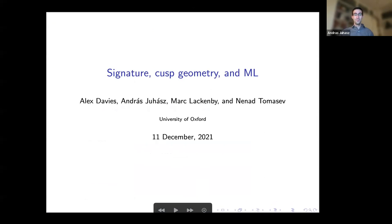Right, so this is a project where we used machine learning as a tool to find an interesting relationship between the cusp geometry of hyperbolic knots and the signature. This is joint work with Alex Davis, Mark Lackenby, and Nenad Tomašev, where Alex Davis and Nenad Tomašev work in machine learning at DeepMind.